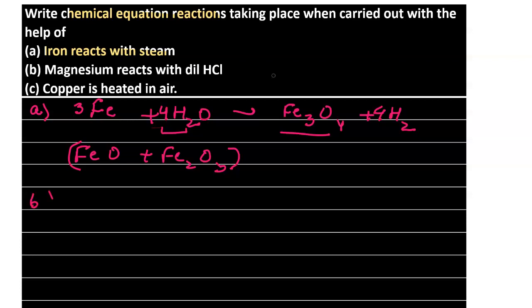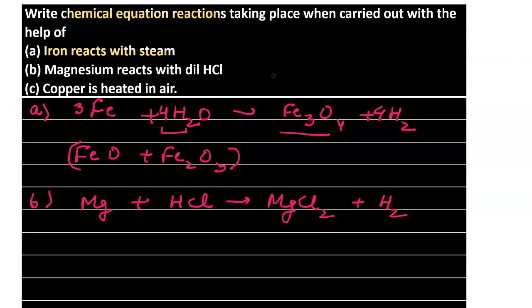The second part asks what happens when magnesium reacts with dilute HCl. Magnesium is an active metal. When it reacts with dilute hydrochloric acid, it forms magnesium chloride (a salt) and releases hydrogen gas. To balance, we place a coefficient of 2 in front of HCl since magnesium chloride has two chlorine atoms.